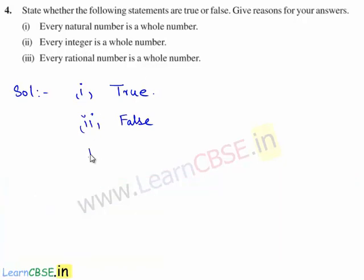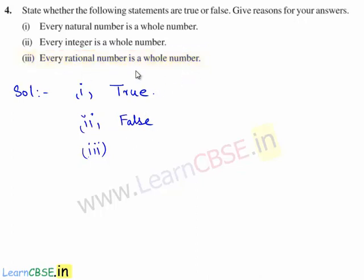Now let's consider the third statement: every rational number is a whole number. Every rational number being a whole number is not possible, so the statement is false. Because the set of rational numbers contains all positive, negative, and fractional numbers, but the set of whole numbers contains only positive numbers. Therefore, every rational number is not a whole number.